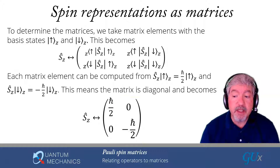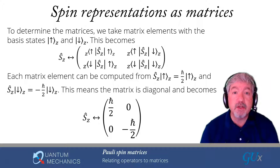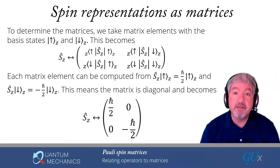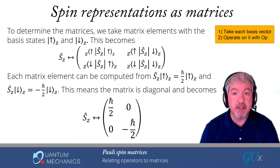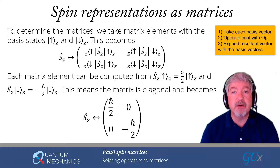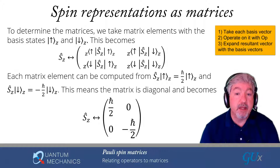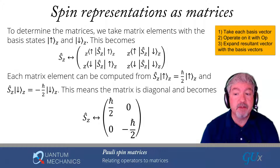I went through this carefully because students often struggle with converting an operator into its matrix representation given a basis. To recap: take each basis vector, operate the operator on it — producing a vector in the space — then ask how to decompose that vector in terms of the basis you're working in. That gives each column of the matrix. Do that for each basis vector and you fill out the entire matrix.